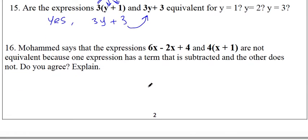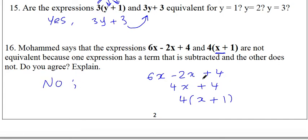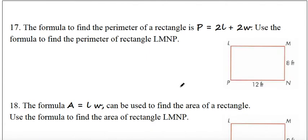Question sixteen: Muhammad says the expressions 6x minus 2x plus 4 and 4(x plus 1) are not equivalent because one has a subtracted term. Do you agree? Let us check: 6x minus 2x plus 4 simplifies to 4x plus 4. Taking 4 as a common factor gives 4(x plus 1), which exactly equals the second expression. So no, we do not agree — this is the proof they are equivalent.